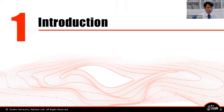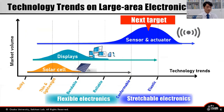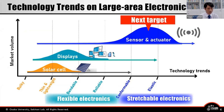First, I will introduce an overview and research background of this research field. It is needless to say that flexible, printed, and large-area electronics are becoming significantly important in our daily life. Typical examples of large-area electronics are solar cells, displays, sensors, and actuators. This figure shows a technology trend on large-area electronics, where the x-axis is a technology trend and the y-axis is market volume.